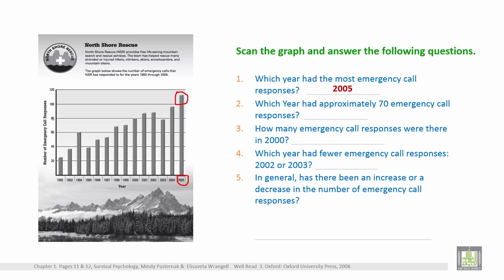On the left-hand side, call responses are marked at 80 and 60. Between 80 and 60 comes 70, so we look for where the bar reaches 70. The answer is that approximately 70 emergency call responses were made in 1998 and 1999. So the answer is 1998 and 1999.